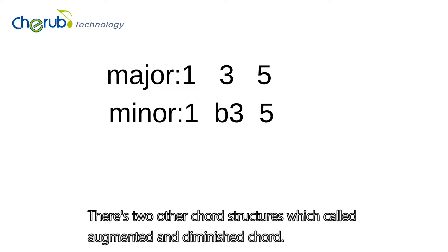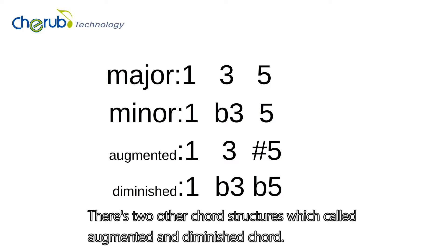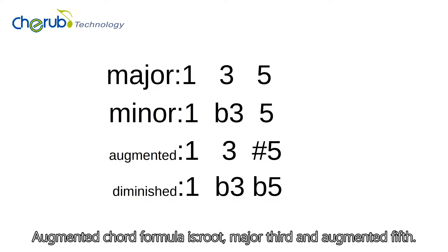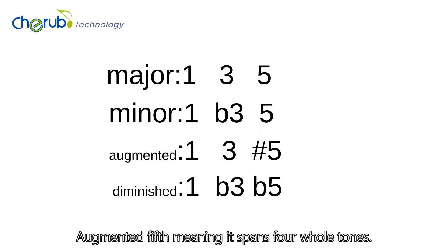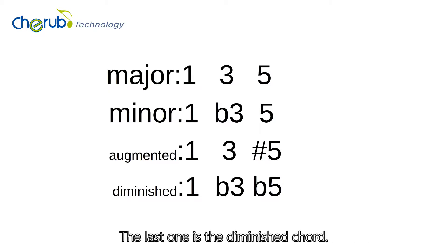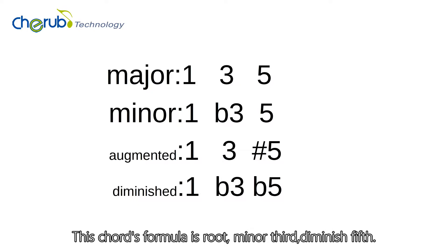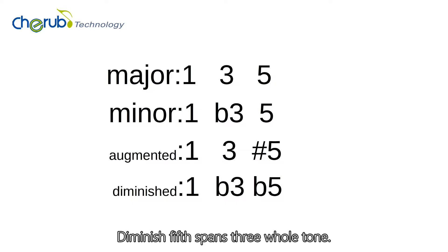There are two other chord structures: the augmented and diminished chords. The augmented chord formula is root, major third, and augmented fifth. The augmented fifth spans four whole tones. The last one is the diminished chord. This chord's formula is root, minor third, diminished fifth. The diminished fifth spans three whole tones.